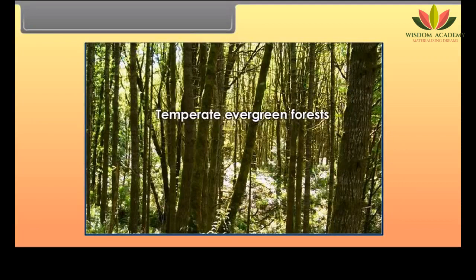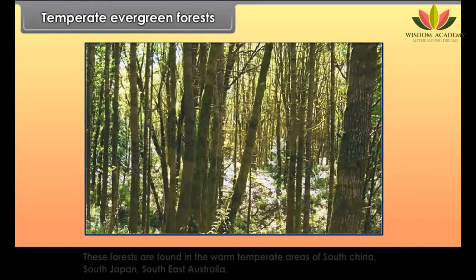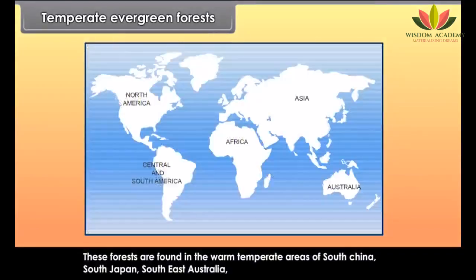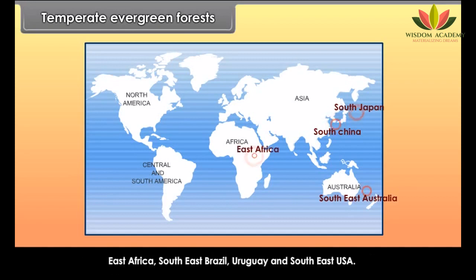Temperate Evergreen Forests are found in the warm temperate areas of South China, South Japan, Southeast Australia, East Africa, Southeast Brazil, Uruguay and Southeast USA.